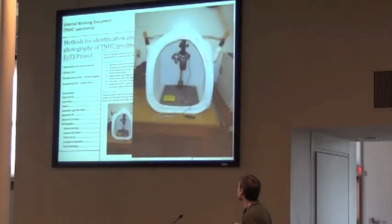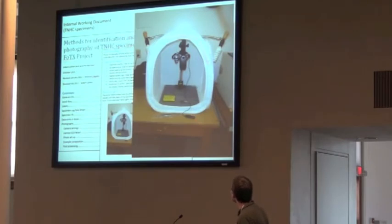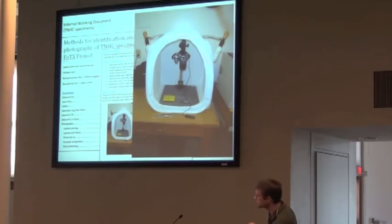Here's our little setup. It's very basic — this is a collapsible light diffuser box. We have the camera on a shutter release, two lights on one side and one on the other side. This whole thing is collapsible and can fit inside a Pelican case so we can travel with it.